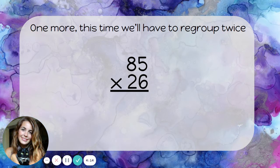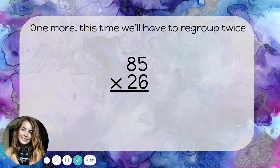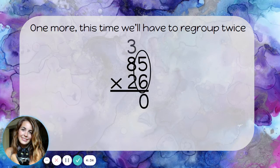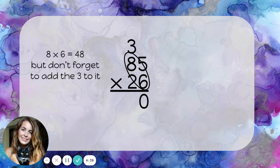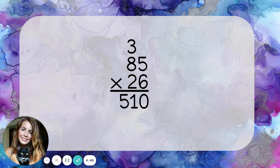One more example, but this time we'll have to regroup twice. So let's start by multiplying eighty-five times six — just ignore the two. Six times five is thirty, so I put down the zero and carry the three. Six times eight is forty-eight, but don't forget to add three more to it — that's fifty-one. Now let's cross off the three; we've already added it and we don't want to get confused.